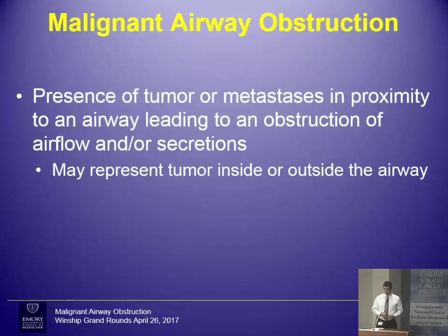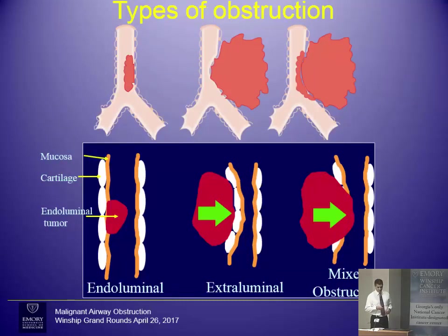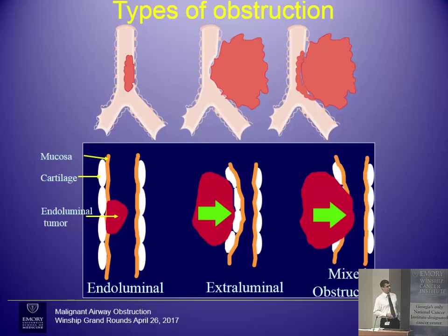To start by defining malignant airway obstruction: this is tumor or metastasis in and around the airway — either an intrinsic obstruction, so tumor within the airway, or something pressing on the airway, an extrinsic compression. We divide it into three categories, which influences how it's managed: endoluminal disease confined within the airway lumen itself; extrinsic compression from a large lymph node or bulky mass that hasn't eroded into the airway yet; and the most common type, mixed obstruction, which has components of both — narrowing from the outside as well as tumor inside the airway.